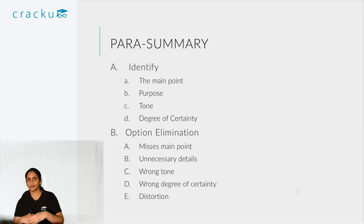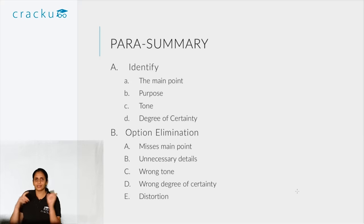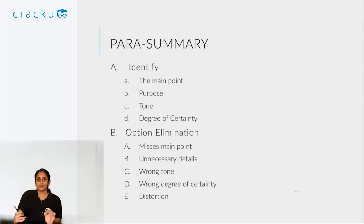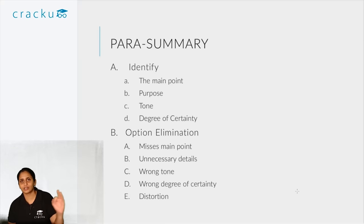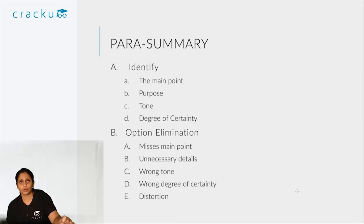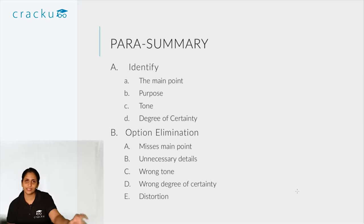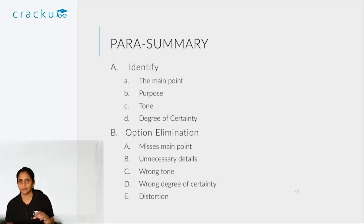Once you have identified the main point, purpose, tone, and degree of certainty, go to the options. First, remove anything that misses the main point or is too bogged down by irrelevant details. Then, remove anything that distorts the tone — if the paragraph's tone is positive, the option's tone must also be positive, and so on. Lastly, eliminate anything that changes the degree of certainty. If the author says something is 'likely to happen' and an option says it 'will definitely happen,' that shift in certainty makes the option incorrect.